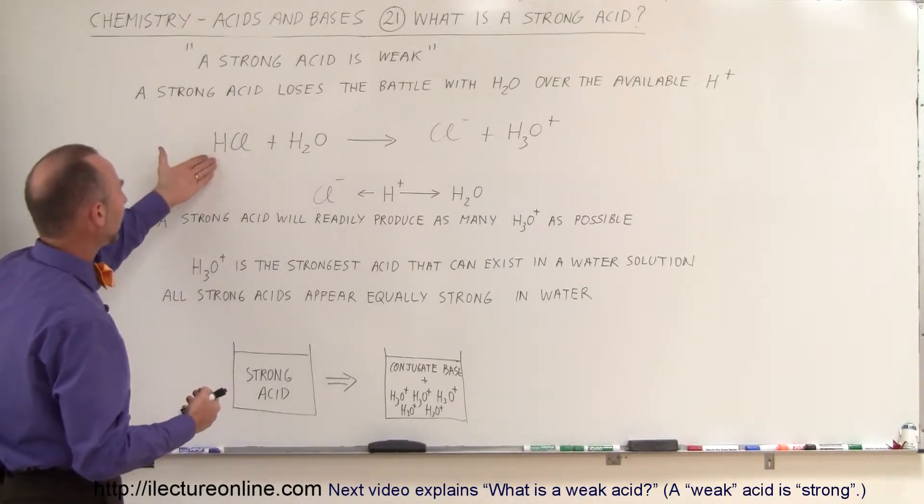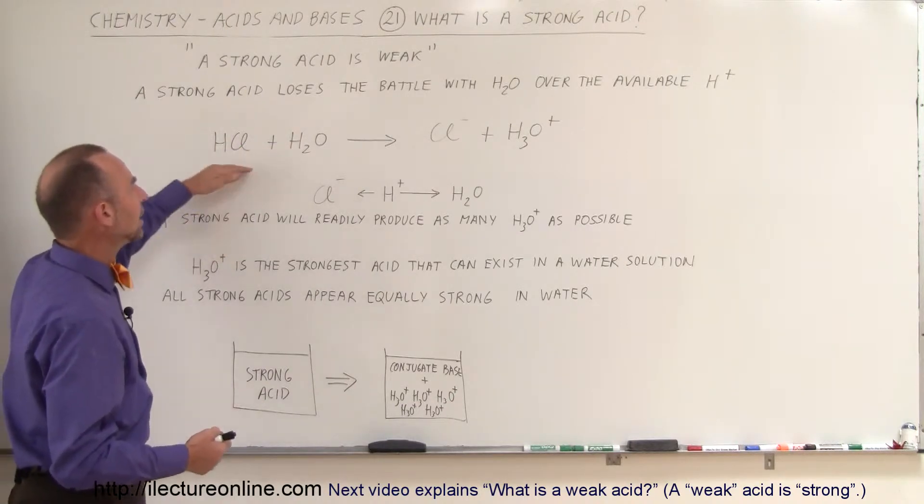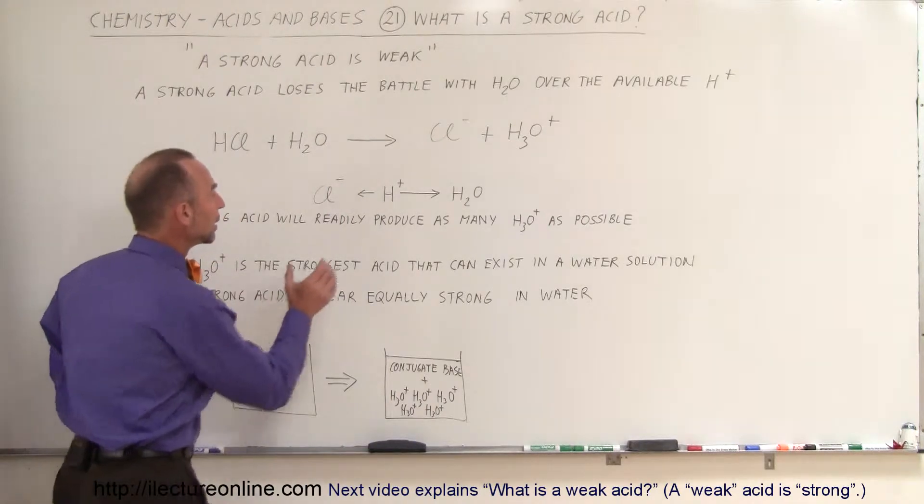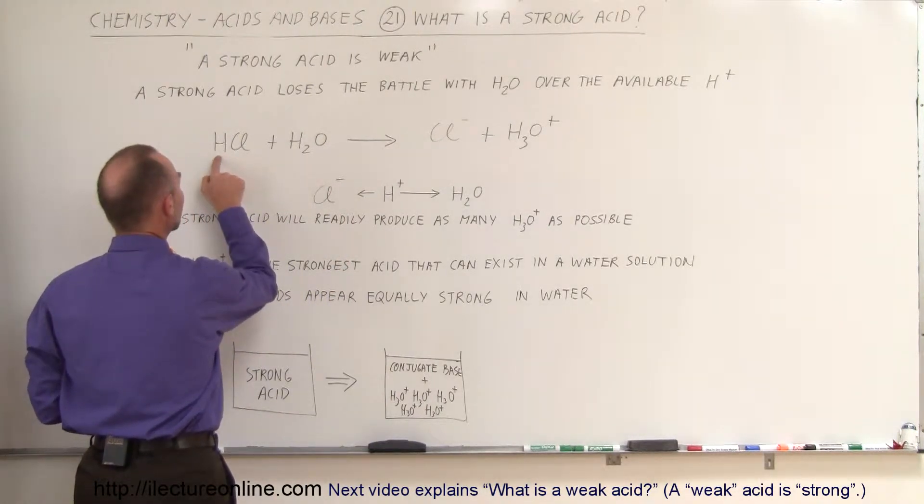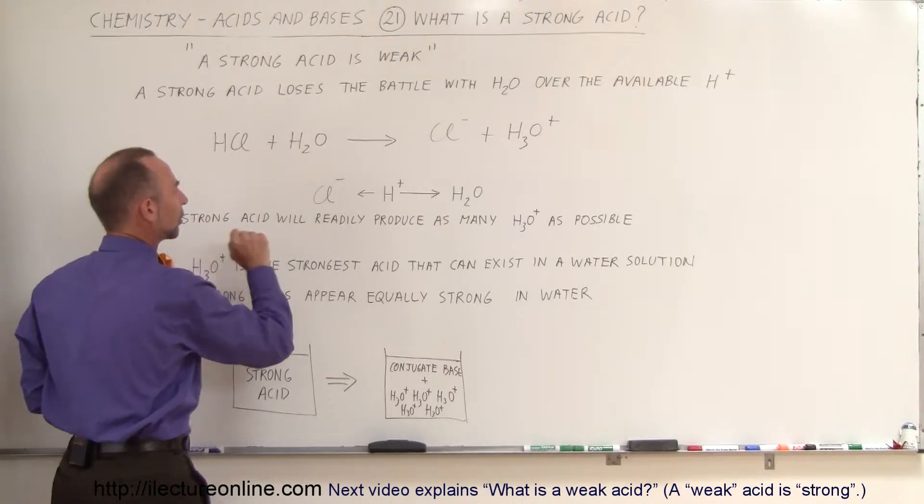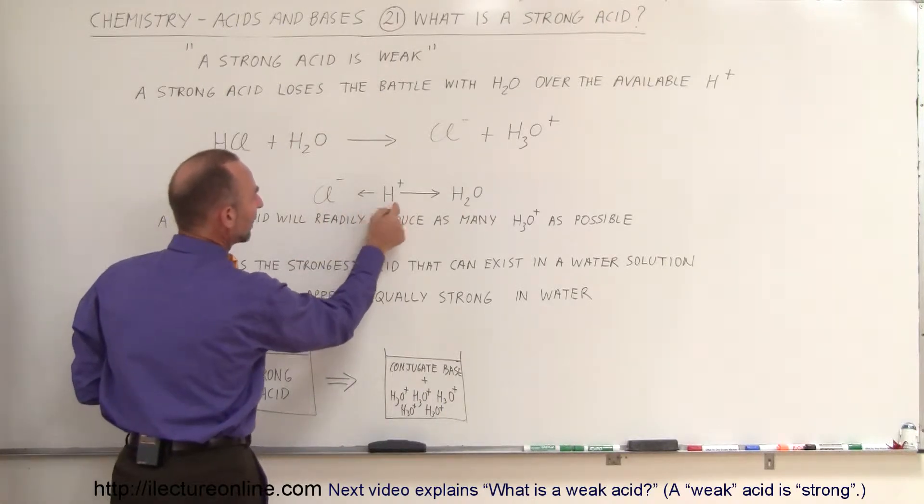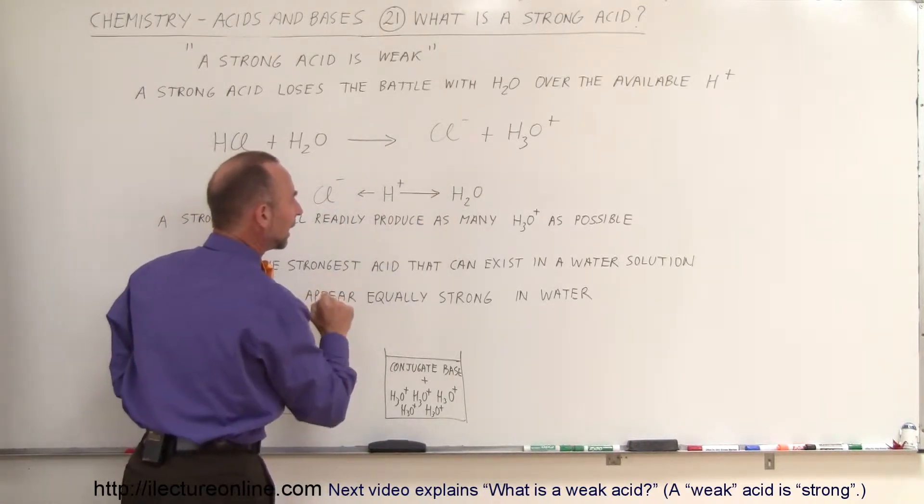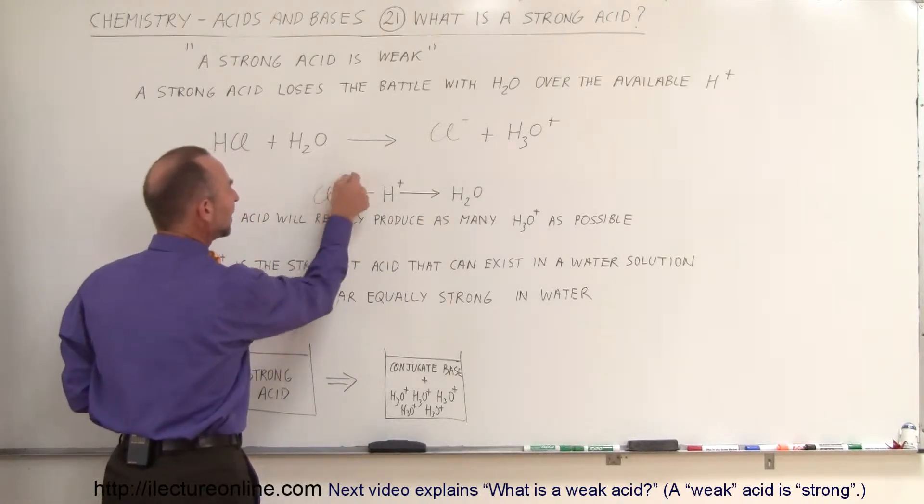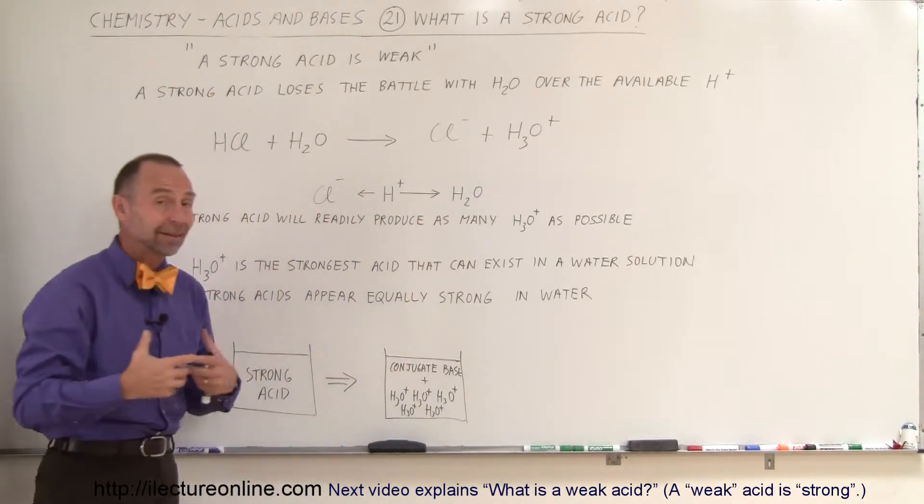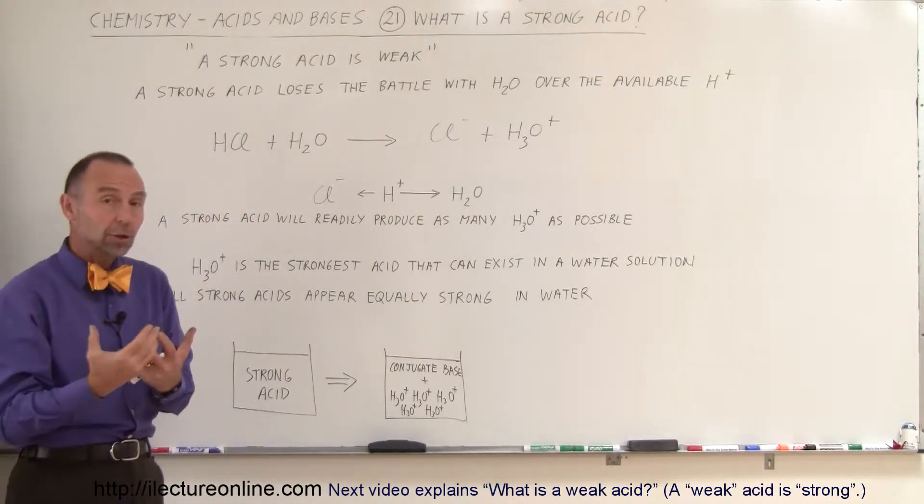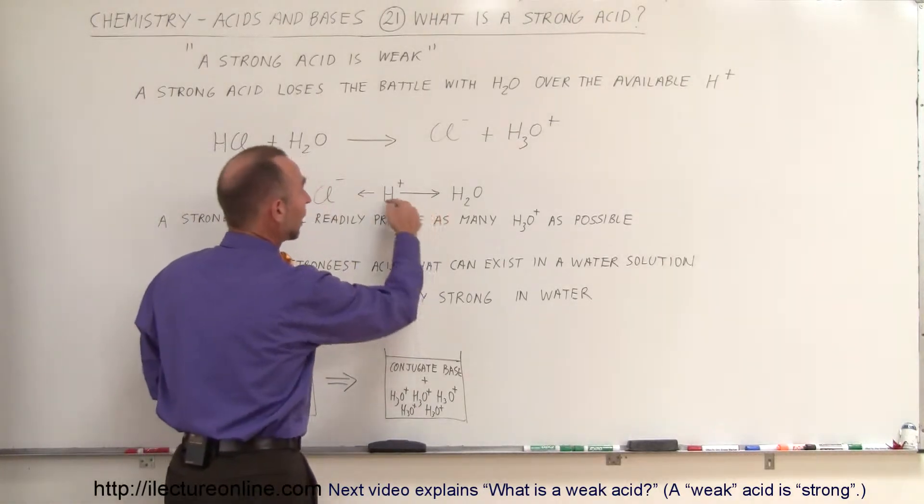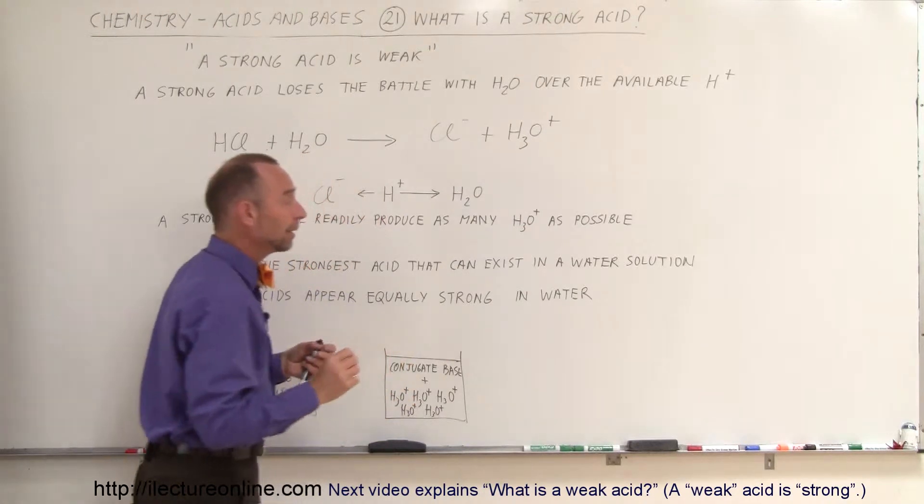So what happens is, for example, we have hydrochloric acid, put it in water, and you end up with the chloride ion and the hydronium ion. Really, what's happening here is that the hydrogen ion will separate from the hydrochloric molecule, and then there'll be a tug-of-war between the chloride ion and the water molecule. And even though the chloride ion has a net negative charge and the water molecule has a net zero charge, the water molecule will pull on that hydrogen ion more strongly and acquire it, and it turns itself into a hydronium ion.